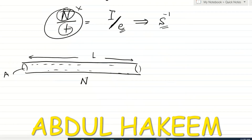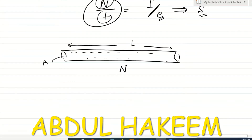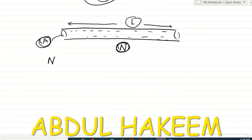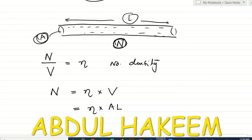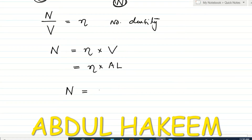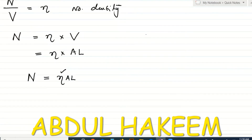Consider a wire — a conductor with many free electrons. Suppose the number of free electrons is N, the cross-sectional area is A, and a segment has length l. The number of free electrons per unit volume is called number density. The total number of free electrons equals number density × volume = number density × A × l.